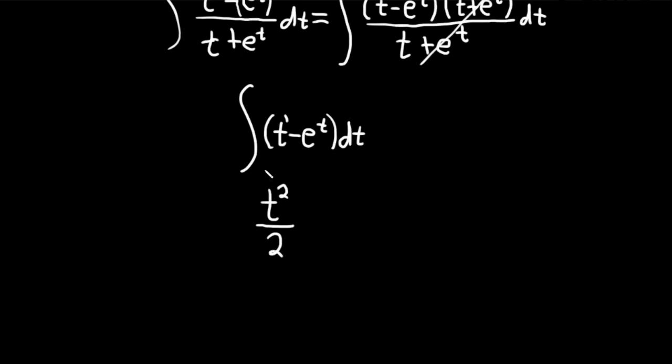And we drop the integral sign because we are integrating. And when you integrate e to the t, you simply get e to the t. Plus our constant of integration, capital C. So that would be the answer to this problem.